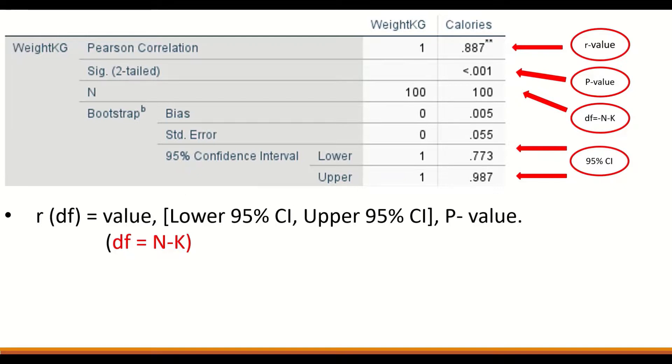Degree of freedom is calculated from N minus K. N is the total number of participants, and K is the total number of variables. We have two variables here: calories and weight. So the value for the degree of freedom is 98.